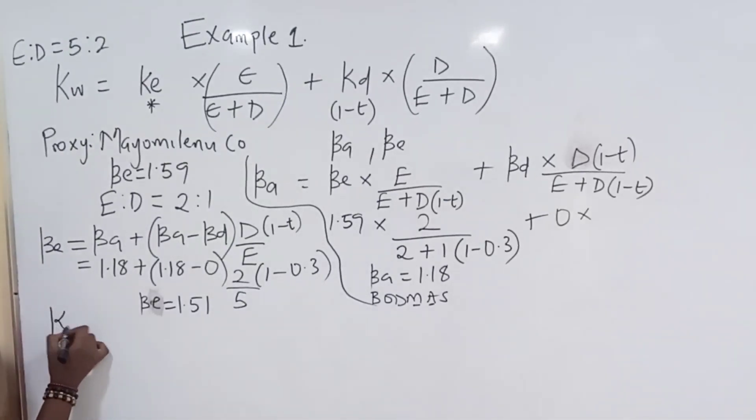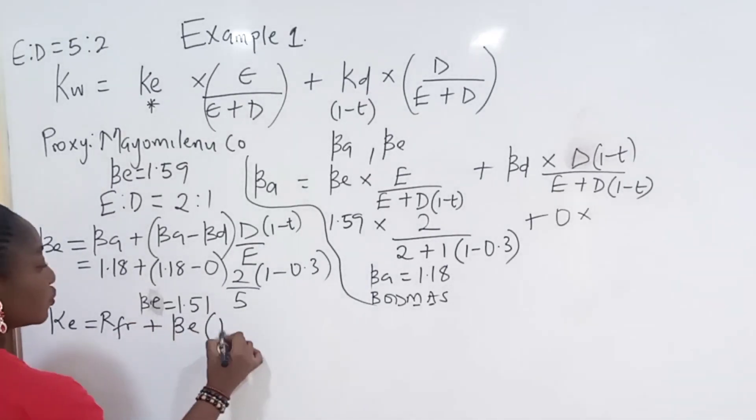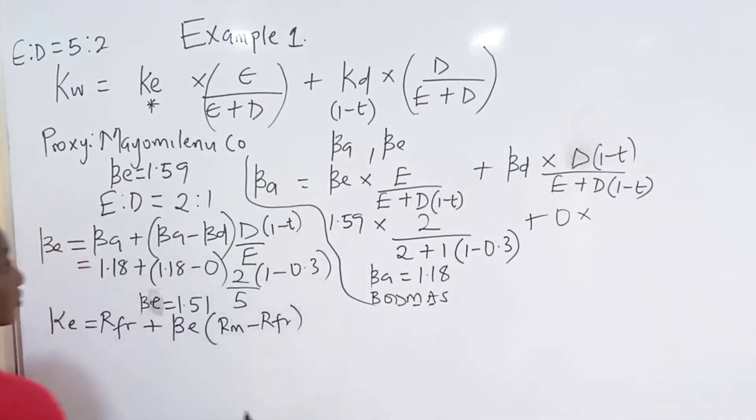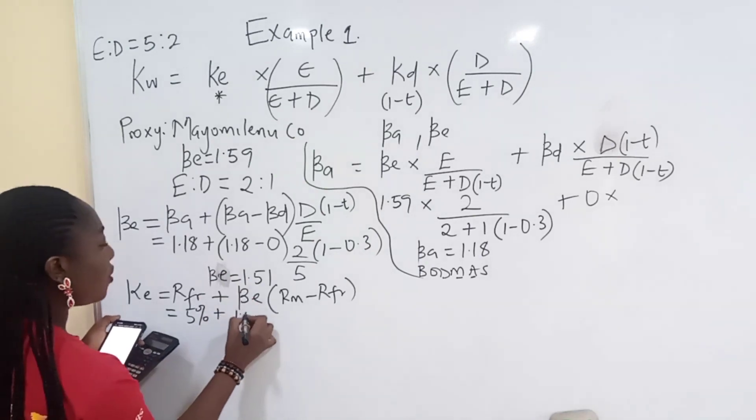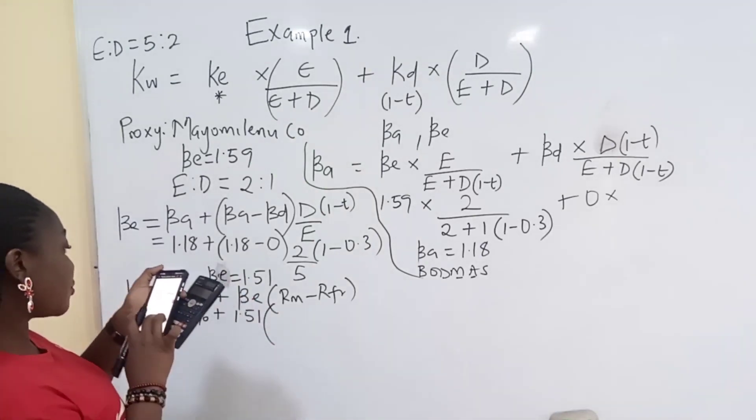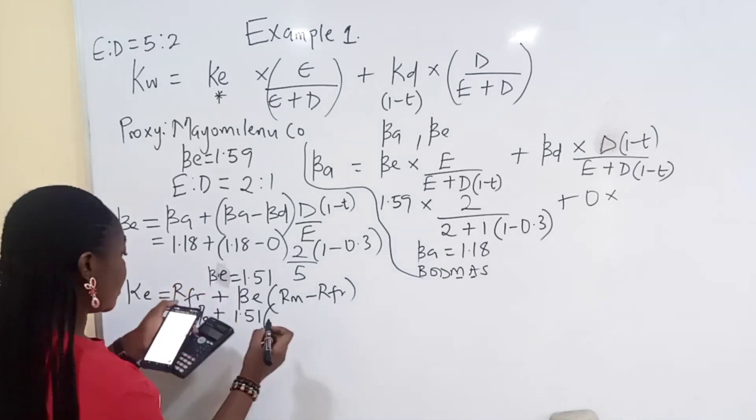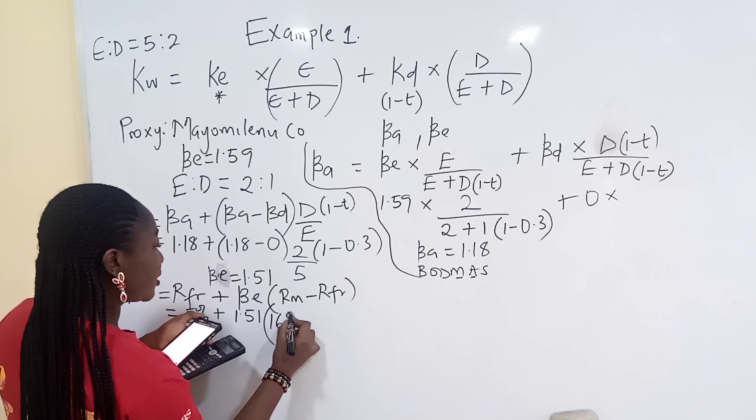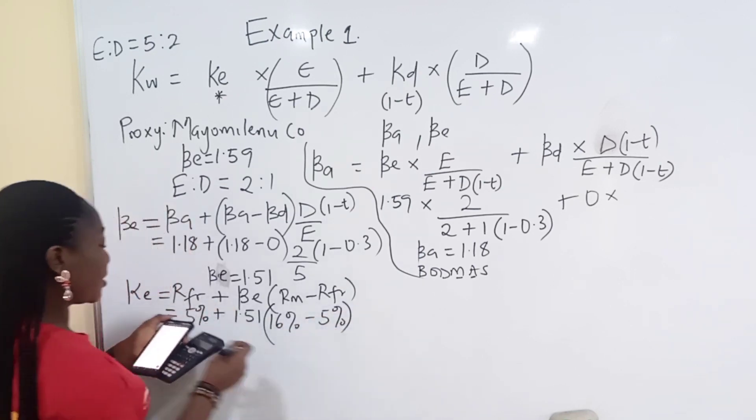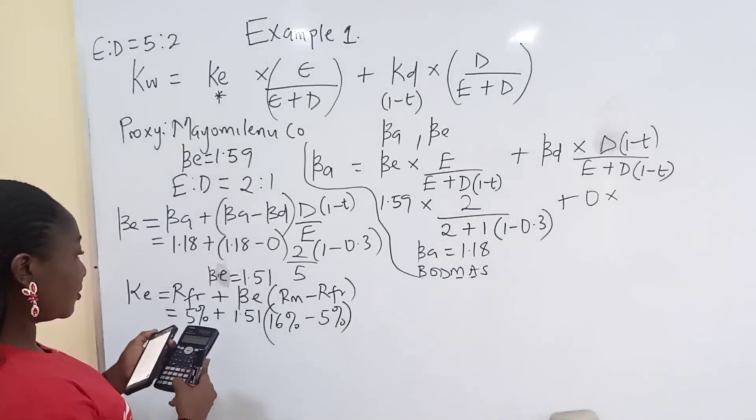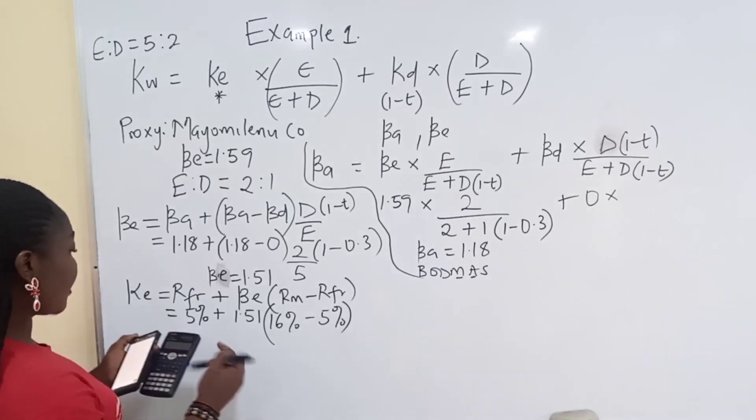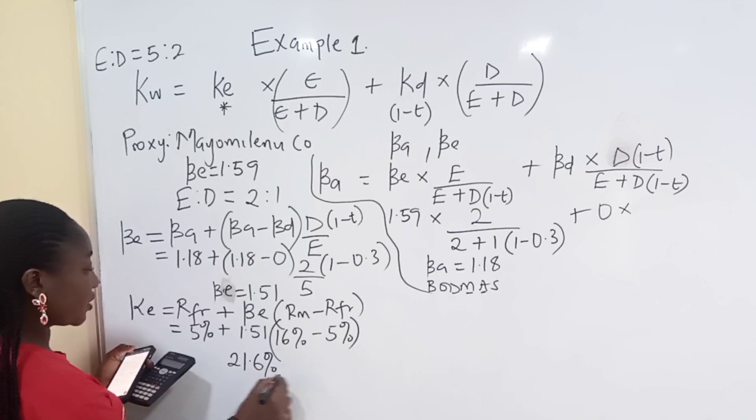Now when you have BE, you will now want to get to your KE. You will now want to get to the fourth step. Now the KE, you use what? Your CAPM approach. That says risk-free rate plus BE into market rate minus risk-free rate. Does it make sense? Now your risk free rate, the risk free rate is 5%. So 5% plus 1.51 into, what is your market return? They tell you average return on stock market worth 16%. 16% minus what? 5%. Now solve this. You do this first. 16 minus 5, that is 11. That is 1.51 times 11 plus 5. That gives you 21.6%.